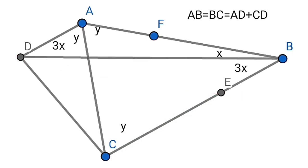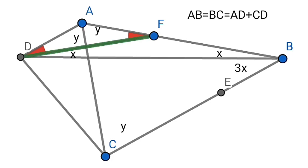Now take a point F such that DF is equal to BF. So the angle FDB is also x, therefore the angle ADF would be 2x, which would also be equal to angle AFD, that is 2x. Therefore DF would be equal to BF, and AF is equal to AD.